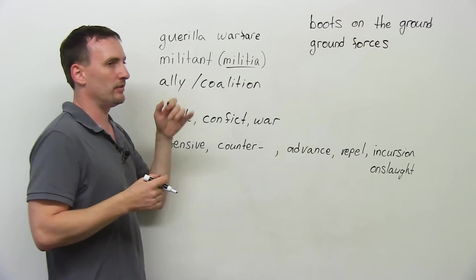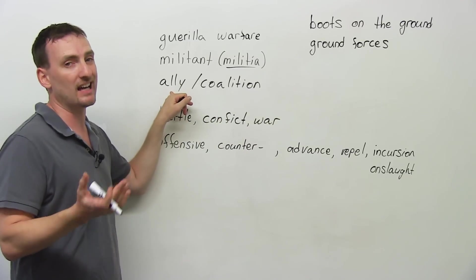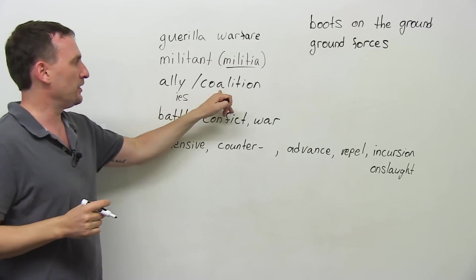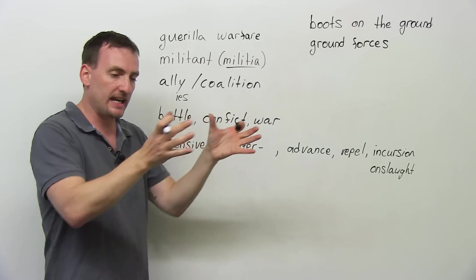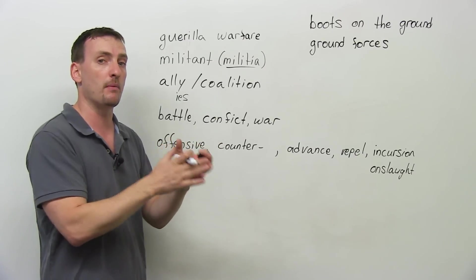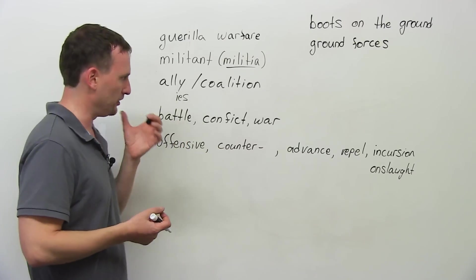Now, you have... Of course, you have... In a war, you have an enemy, but you also have an ally or allies, if you have more than one. And then you have a coalition. When you create a group of nations, especially, or groups that join together for a common fight, that is a coalition. So you hear a lot about that in the news as well.